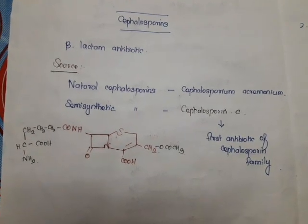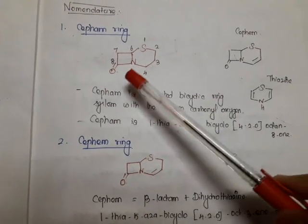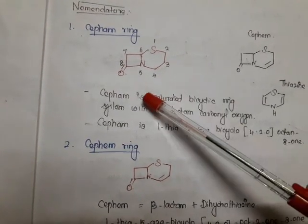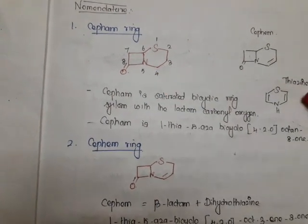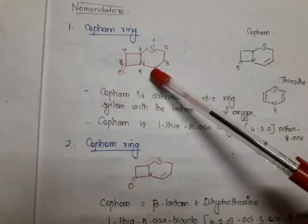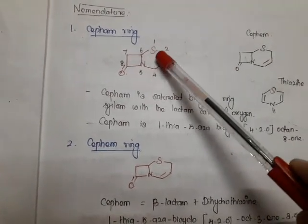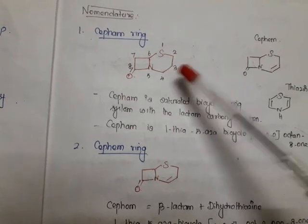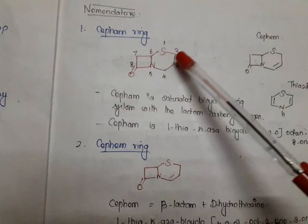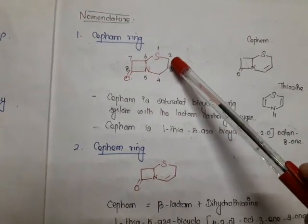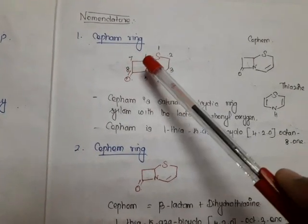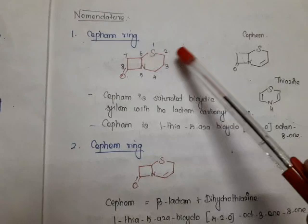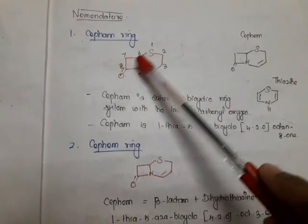Now we will see the nomenclature of cephalosporin. The basic nucleus for cephalosporin is called the cepham ring. Already we have known the basic nucleus for penicillin is called the penam ring. For cephalosporin this is called the cepham ring. The thiazin ring is having two double bonds. This cepham ring is similar to the thiazin ring but it is not having any double bond. That's why it is called tetrahydrothiazin. Two double bonds are absent, so four hydrogens are added — that's why it is called tetrahydrothiazin ring. This is fused with a beta-lactam ring, making it a saturated bicyclic system with a lactam carbonyl group.